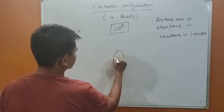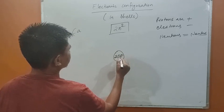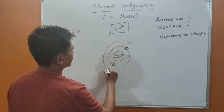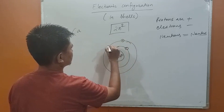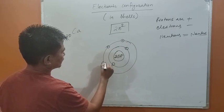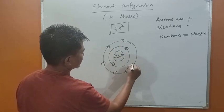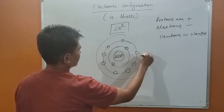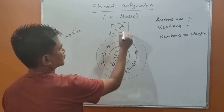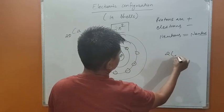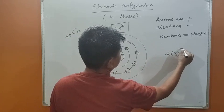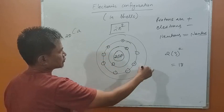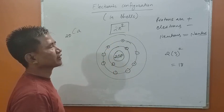There are 20 protons inside the nucleus of the calcium atom. First shell: 2 electrons. Second shell: 8 electrons. According to the formula, the third shell can contain up to 18 electrons, so you might think we can put 10 electrons in the third shell — but that is not the correct way.